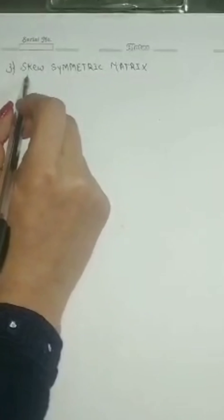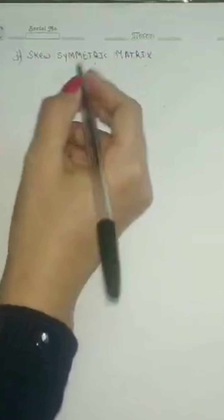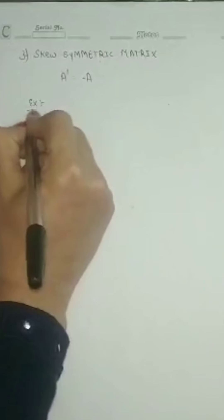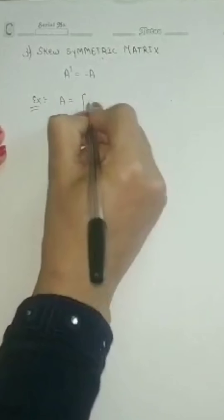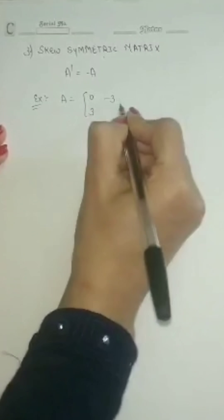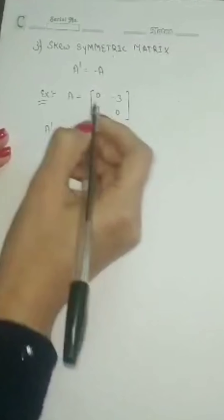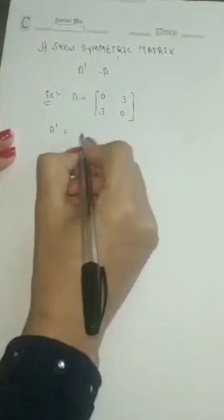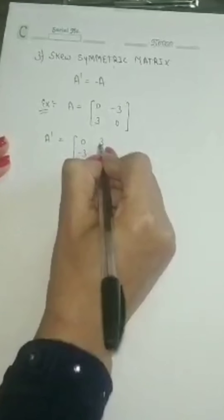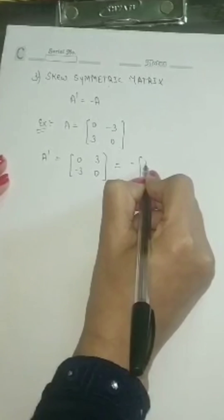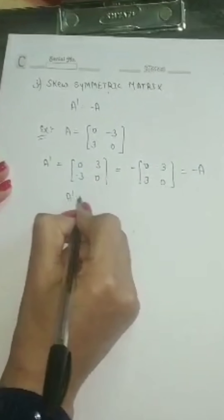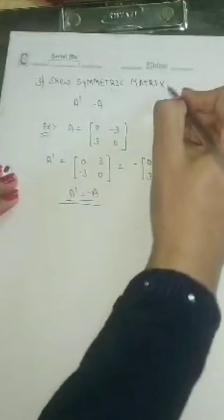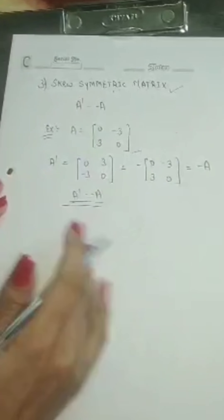The next type of matrix is called a skew-symmetric matrix. In this case, A transpose should be equal to minus A. For example, we are having matrix A: 0, minus 3, 3, 0. If I do the transpose — changing rows to columns and columns to rows — we get 0, minus 3, 3, 0. This can also be written as minus of 0, minus 3, 3, 0, which is equal to minus A. So since A transpose equals minus A, this matrix A is called a skew-symmetric matrix.